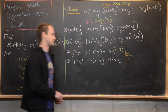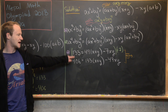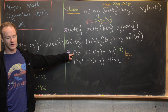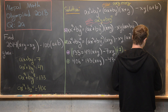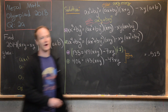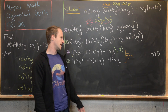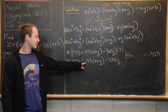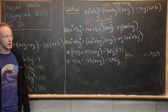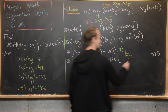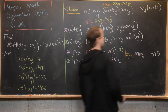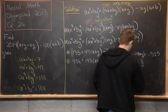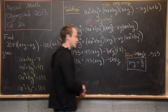Multiplying the purple equation by -7 and adding: the left side gives 406 - 7·133 = -525. The xy terms cancel (−49xy + 49xy = 0). The coefficient of (x + y) is 133 - 7·49 = -210. So -210(x + y) = -525, which gives x + y = 5/2.